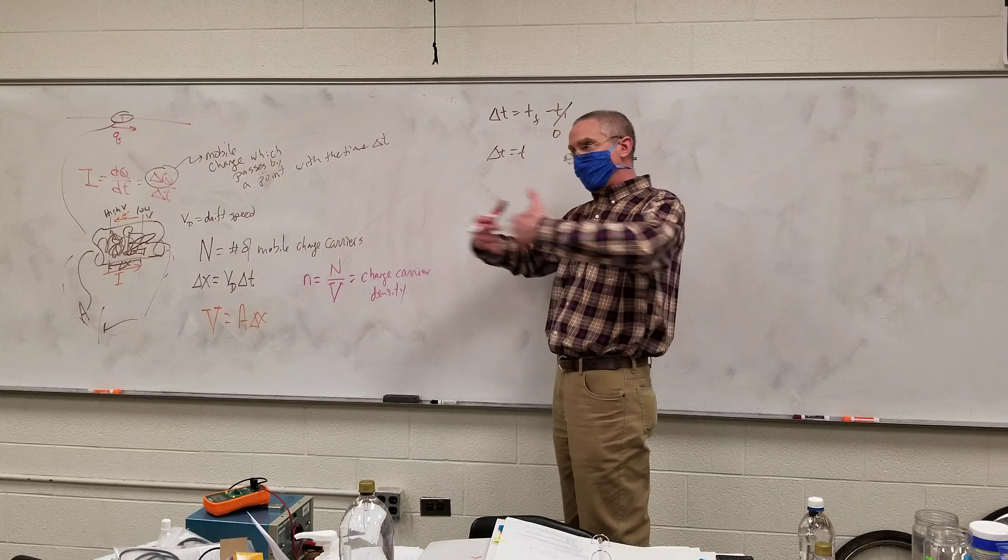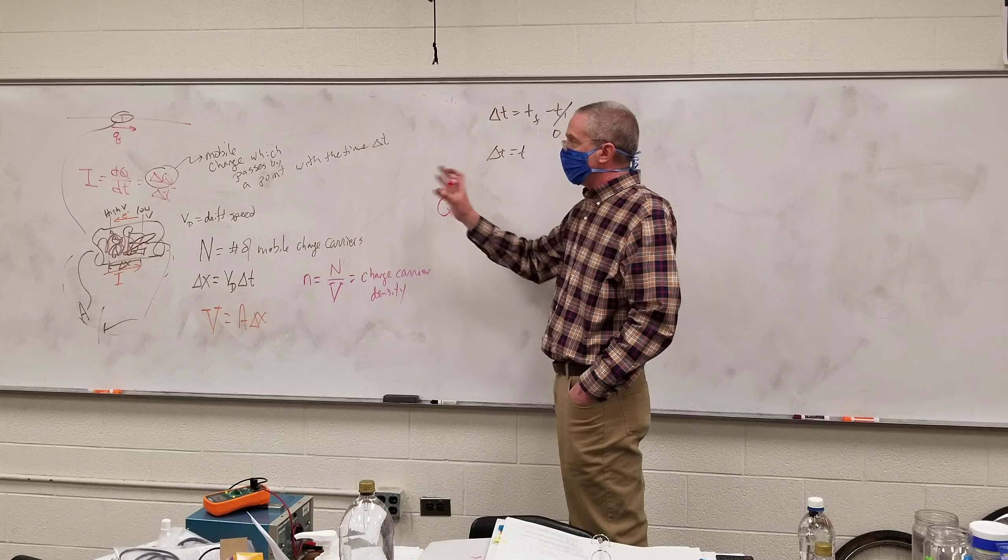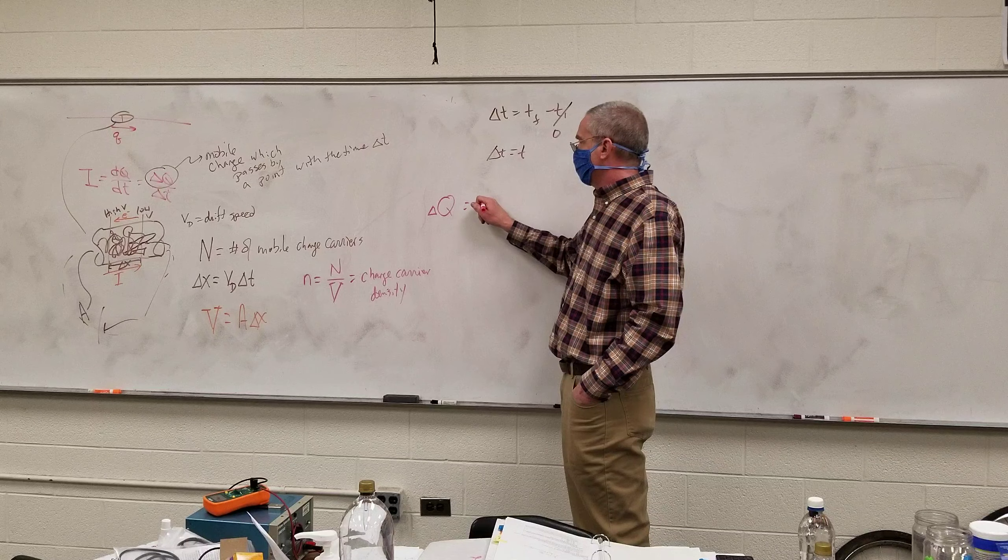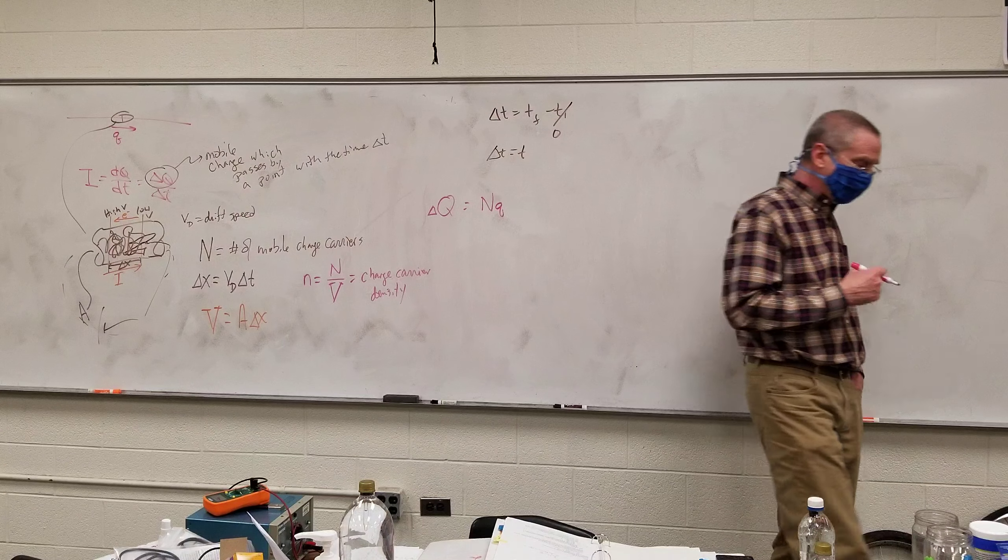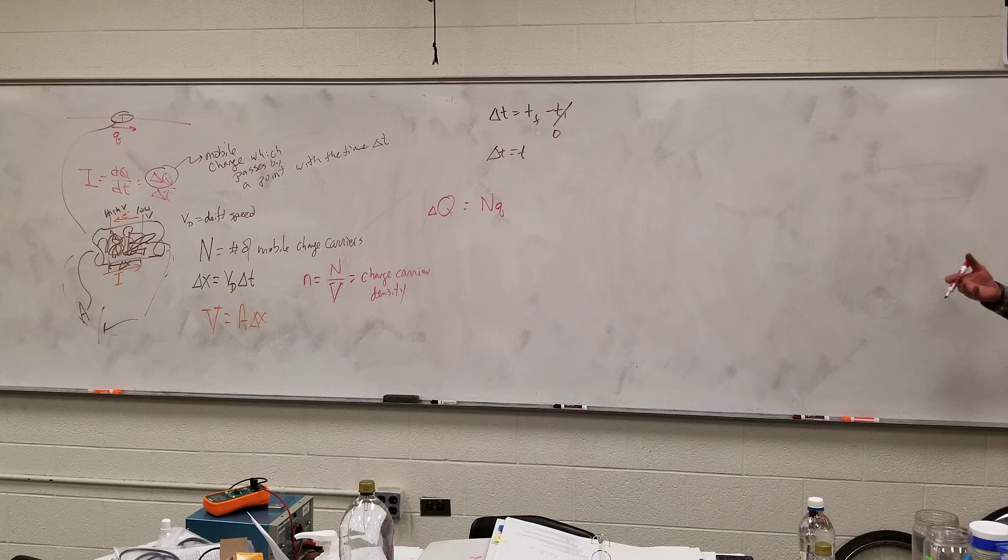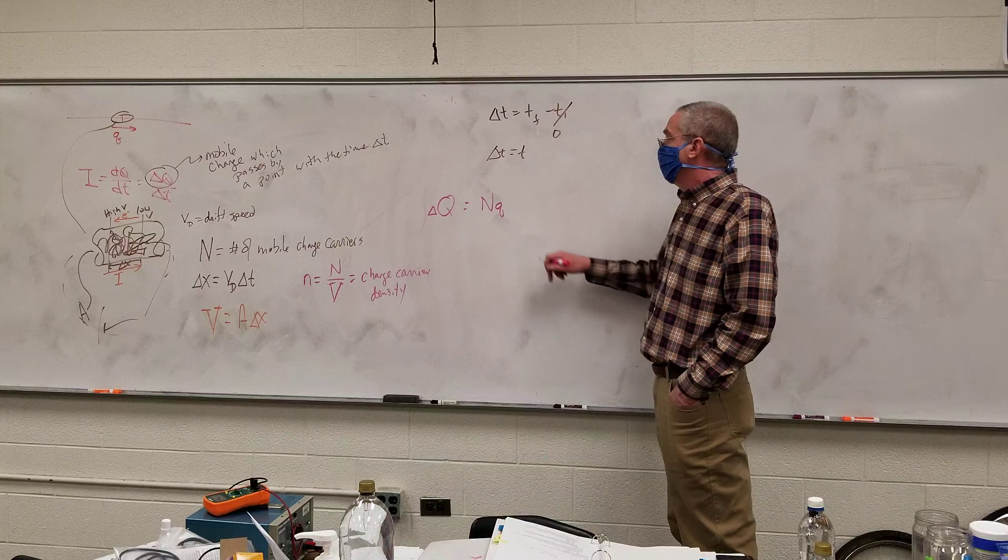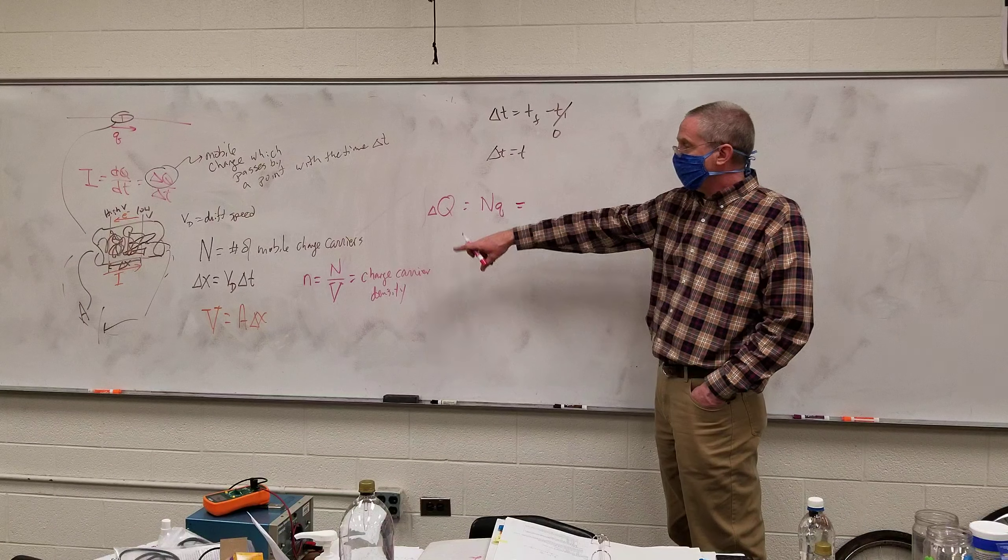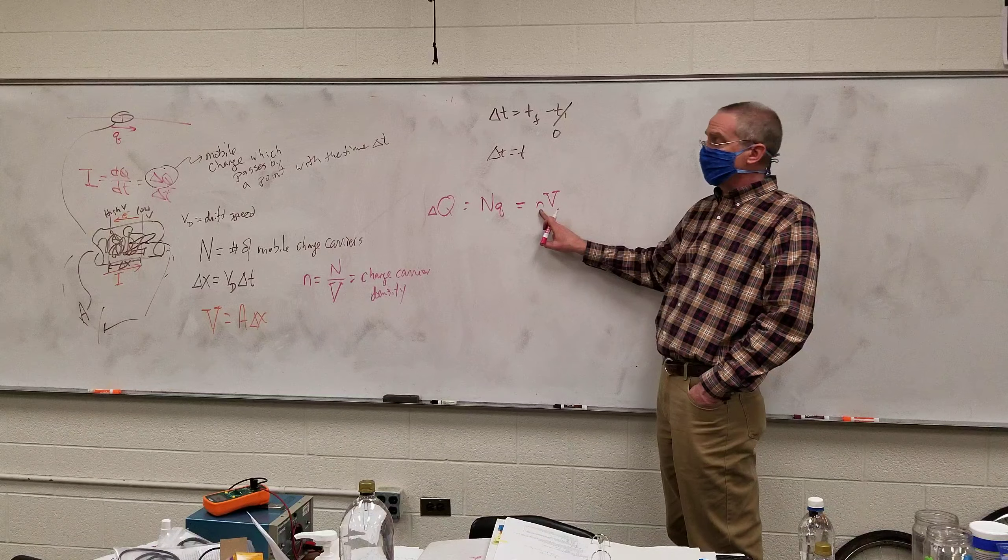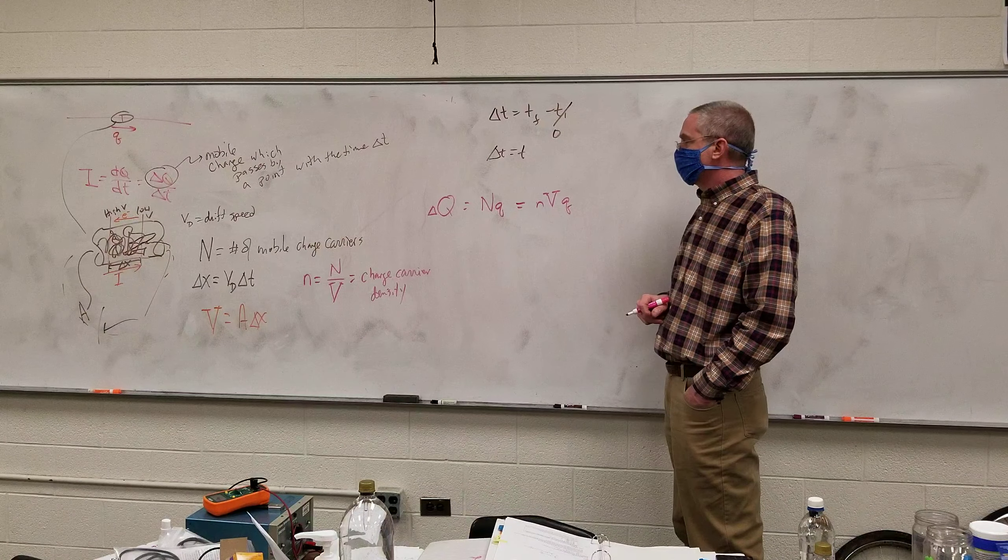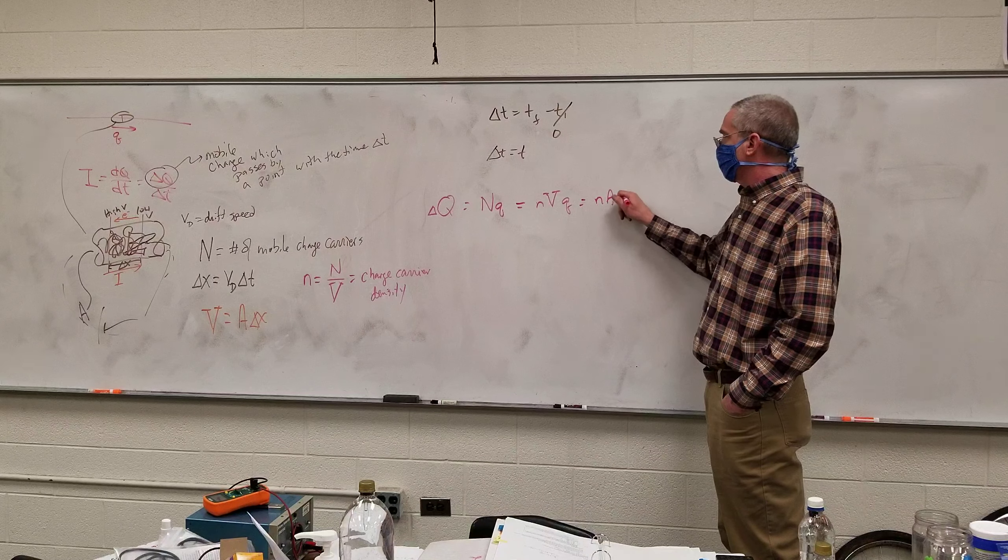So if I'm thinking about how much charge is passing through my section of wire here, that should be the amount of charge passing through. The number of charge mobile carriers, the actual number of charges, times whatever the charge is of each of these carriers. I am making the assumption right now that they all have the same charge. Ultimately, I'm going to make the assumption that they're electrons, but for right now I'm going to keep it generic. Since N over V, capital N over V is little n, big N must be little n times the volume. So the charge carrier density times the volume times Q. And the volume we know is A delta X, so that's n A delta X Q.